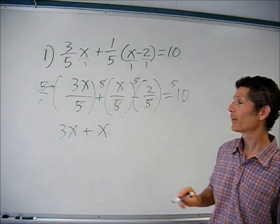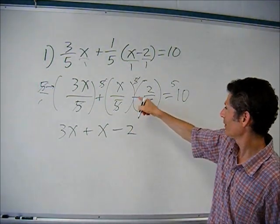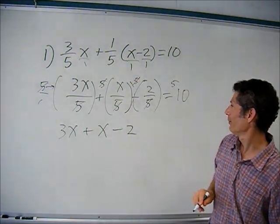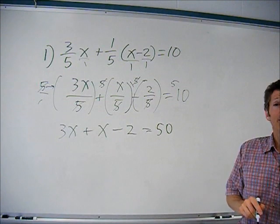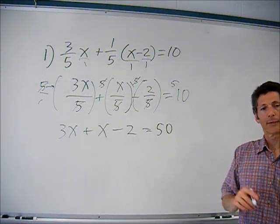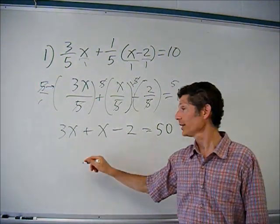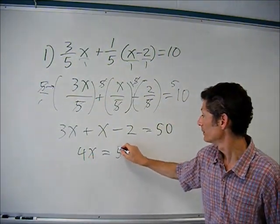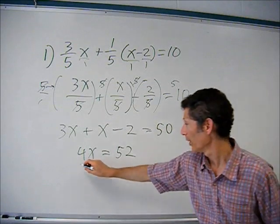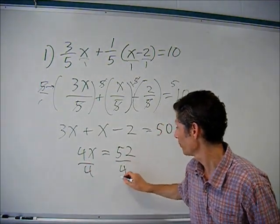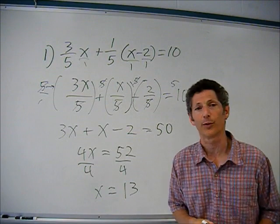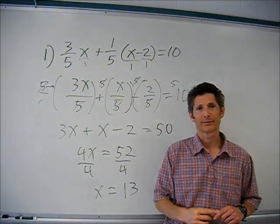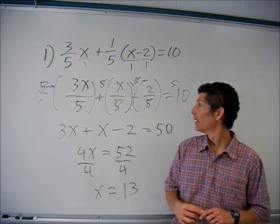Really I just have 3x plus x minus two equals fifty. I'll combine my x's: 4x. I'm going to move the two to the other side to get 52, then divide by 4. x equals 13. Bottom line: when you have fractions, the easiest way is just to get rid of the fraction by multiplying everything by that denominator.